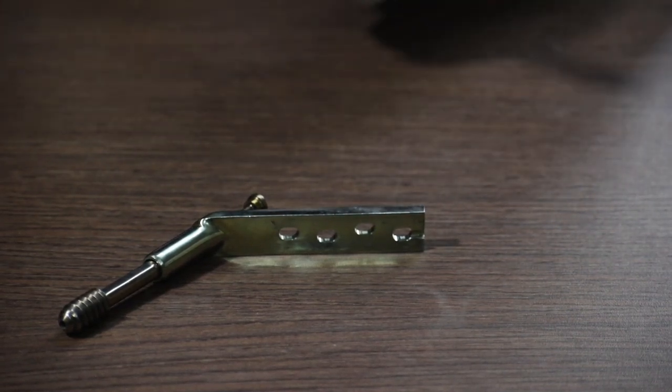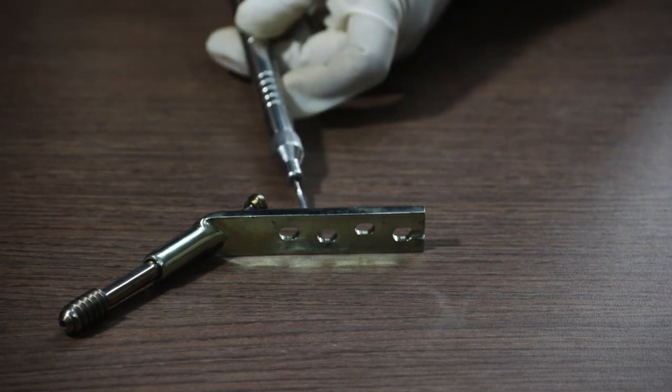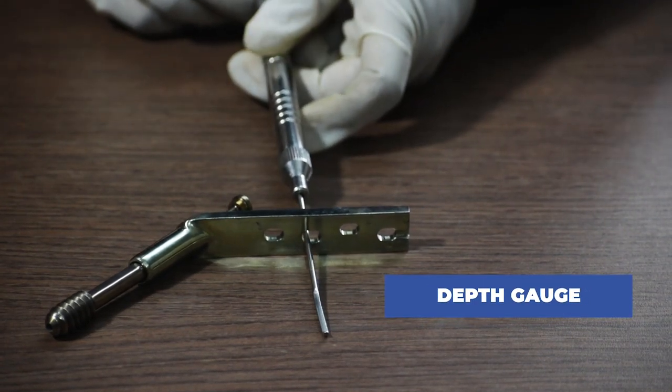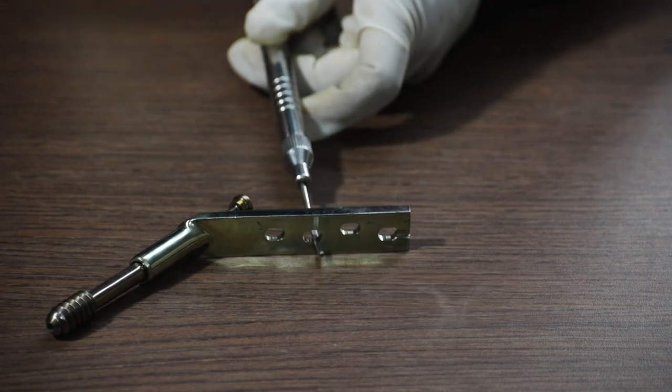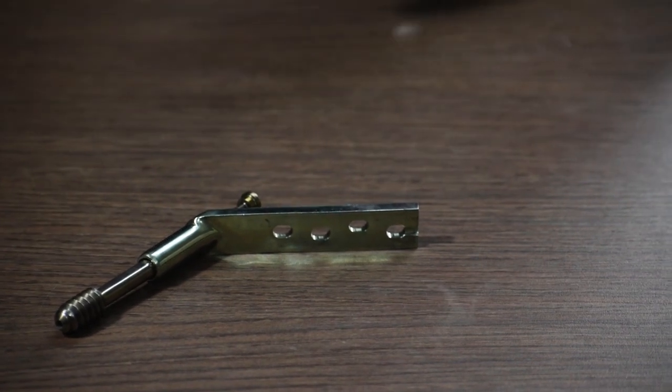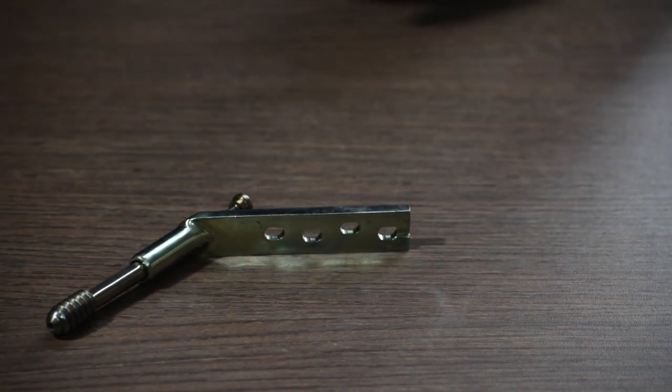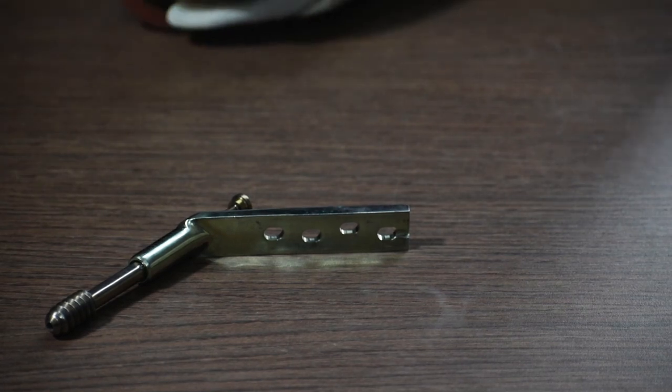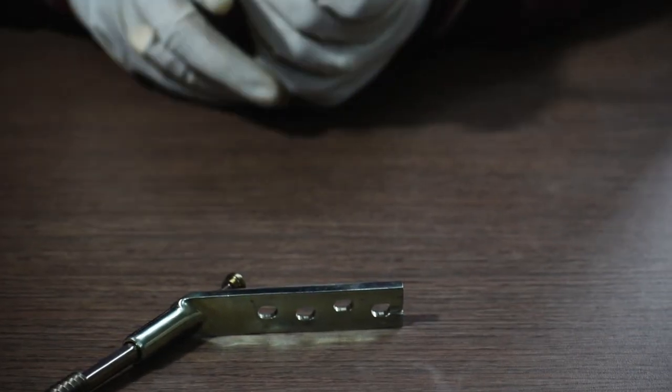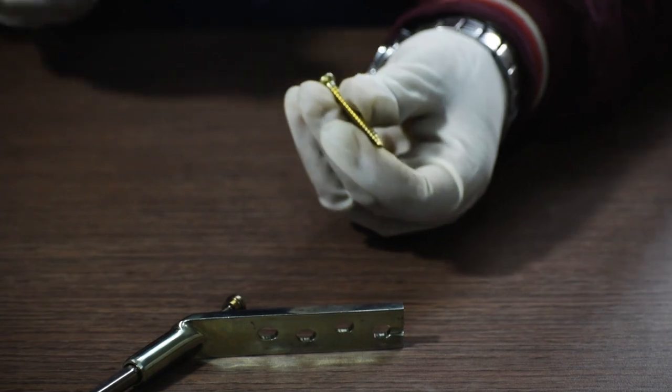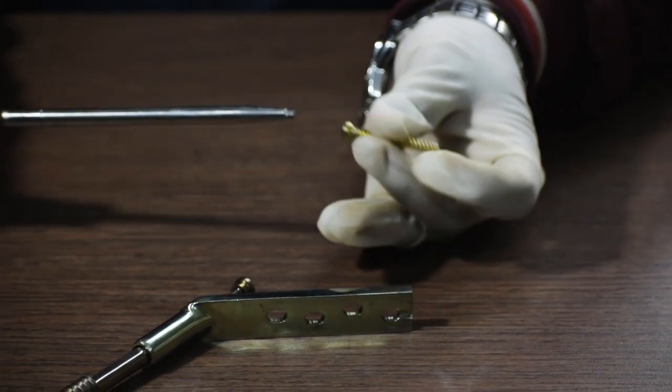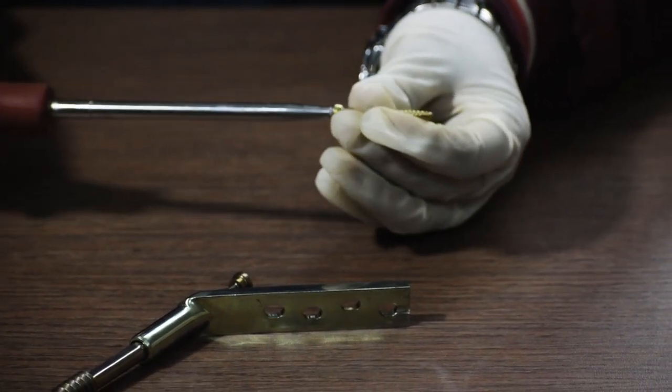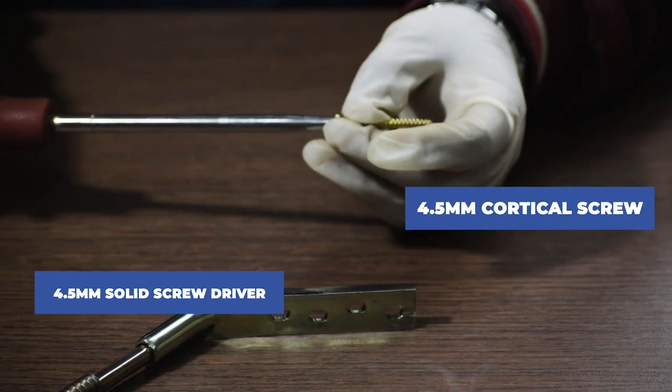After that we will use a depth gauge to measure the length of the screws to measure the length of the bolts needed to be fixed in this hole. After that we take the screw of the length required and with the help of a 4.5 mm solid screwdriver we are going to fix a 4.5 mm cortical screw through the drilled hole in the shaft region of the plate.